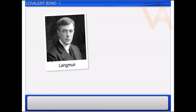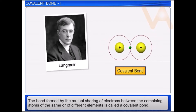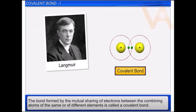Langmuir refined the Lewis postulates and introduced the term covalent bond. The bond formed by the mutual sharing of electrons between the combining atoms of the same or of different elements is called a covalent bond.